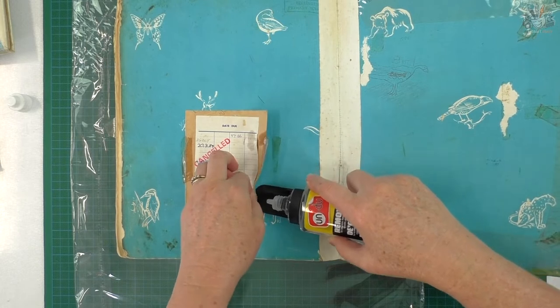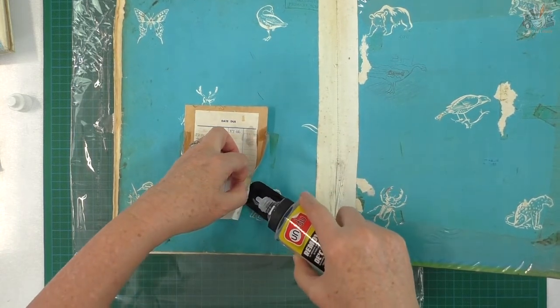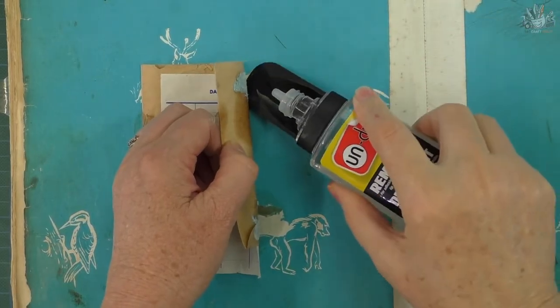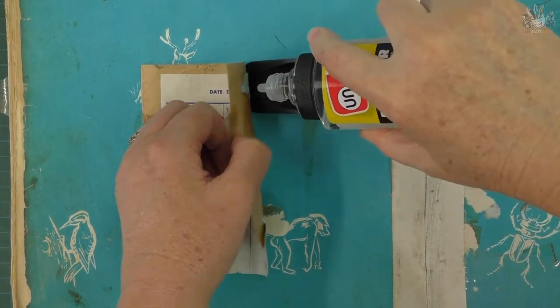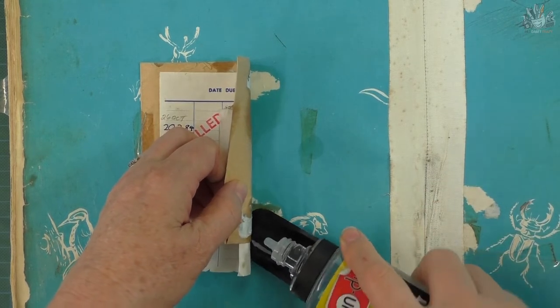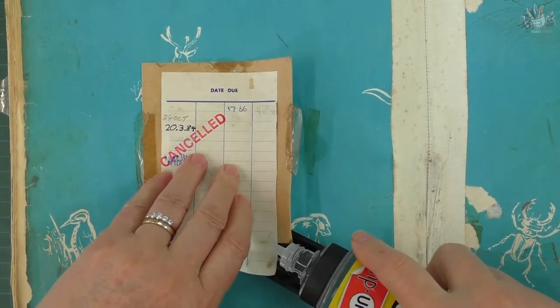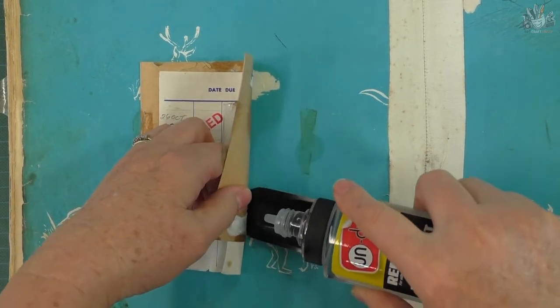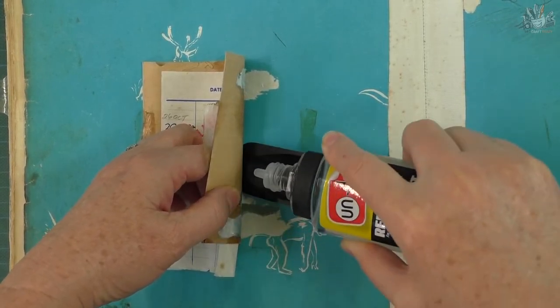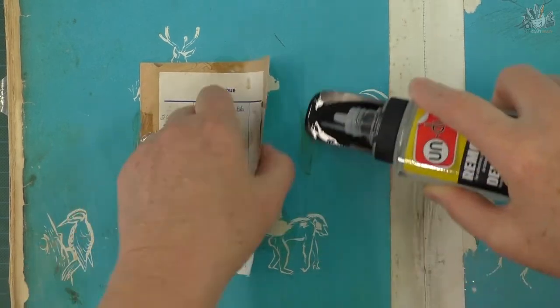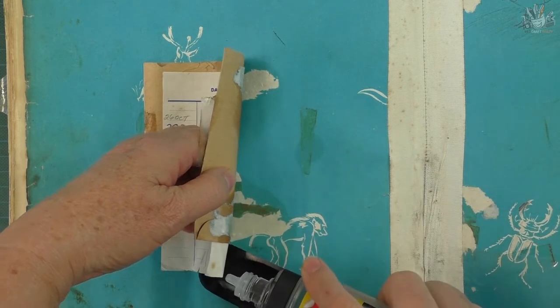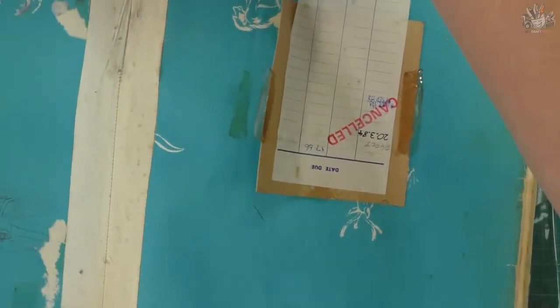And just gently start pushing the glue away. It dissolves the glue pretty quickly. Use the scraper, it's really good. I've also found slicing it like that works good too rather than pushing it like that. I'll turn it around and come from the other side.